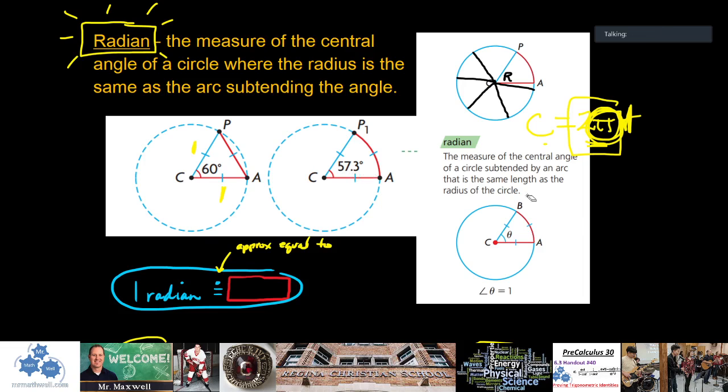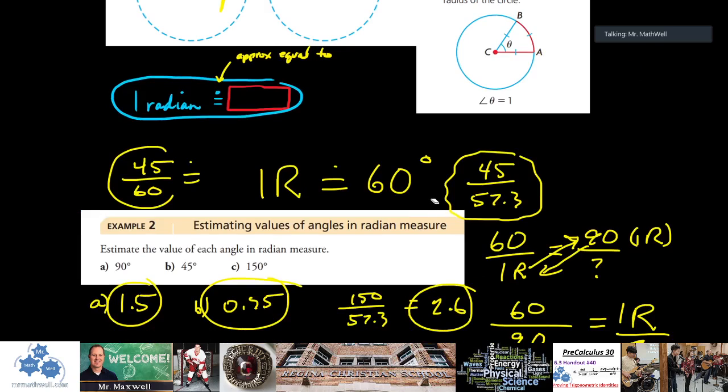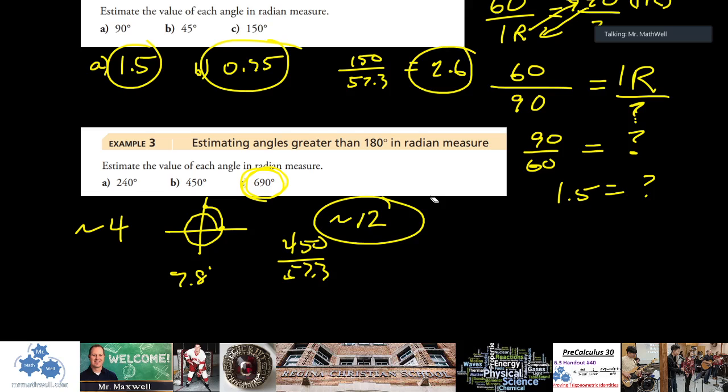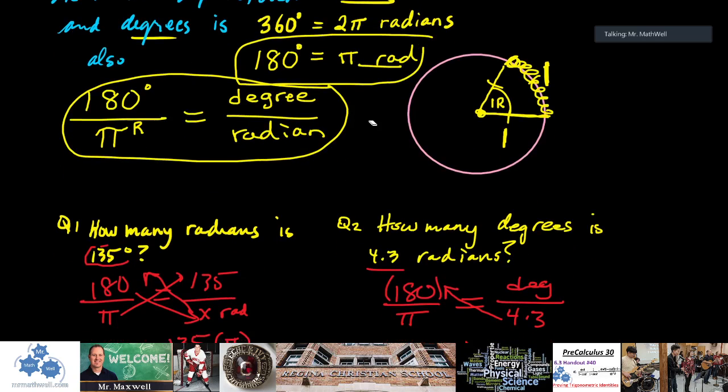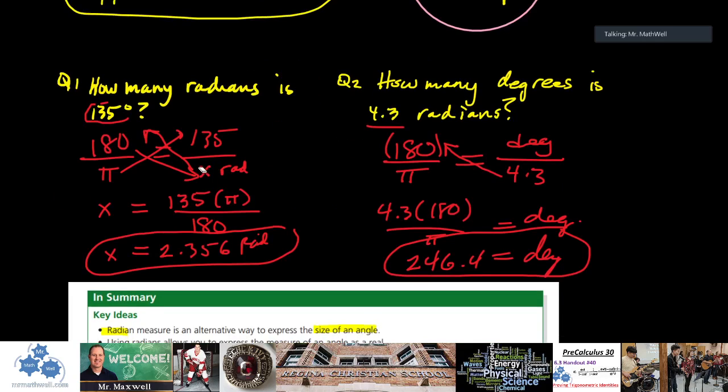360 degrees is about 6.28 radians. What is 6.28 radians approximately? That's equal to 2 pi radians. So 360 degrees equals 2 pi radians, 180 degrees equals 1 pi radian. We can make all sorts of conversions. If you have a certain number of degrees and you want to find radians, you just use this special proportion: 180 over pi equals degrees over radians. You plug your known value in, solve for the missing value, and you can get pretty exact numbers.